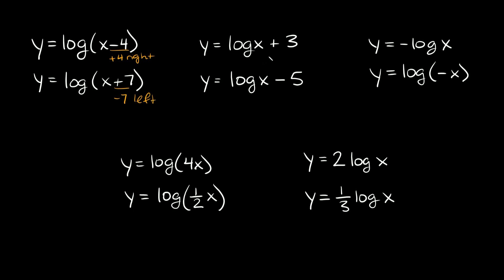What about a vertical translation? Here we have y equals log x plus 3. You can see that this number at the very end is not in a set of parentheses with the x. This number tells you how many spaces you move it up or down. So here we would move this function up 3 spaces. And then here, log x minus 5, we would move this one down 5 spaces.